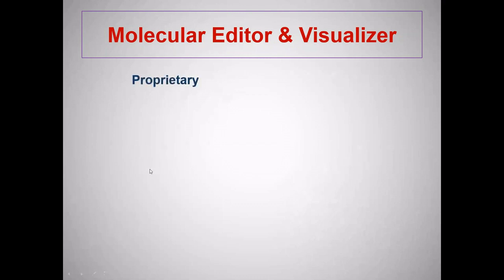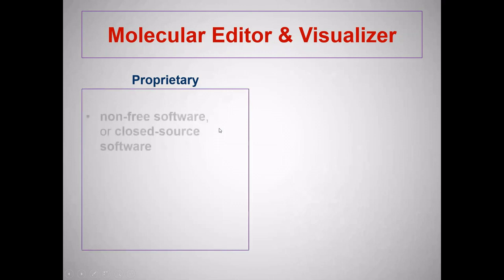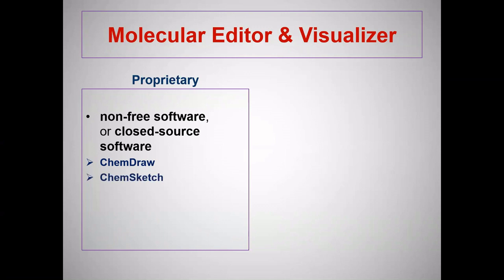Examples of commercially available molecular editor softwares include ChemDraw, which along with Chem3D and ChemFinder is part of the ChemOffice suite developed by PerkinElmer. Another one is ChemSketch developed by ACD Labs, which also has a freeware version for academic purposes with lesser features compared to the commercial version. GaussView is a graphical interface used with the Gaussian quantum chemistry package developed by Gaussian Inc., USA. SPARTAN, developed by Wavefunction Inc., USA, has an inbuilt graphical interface.